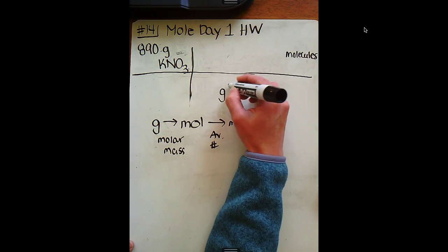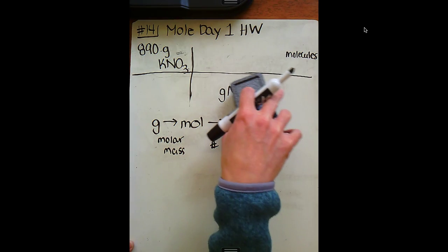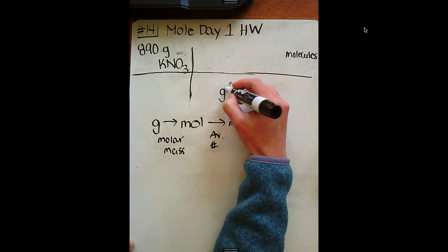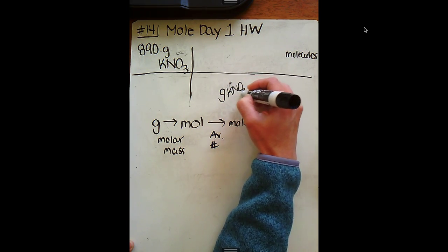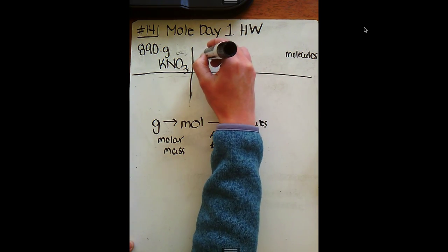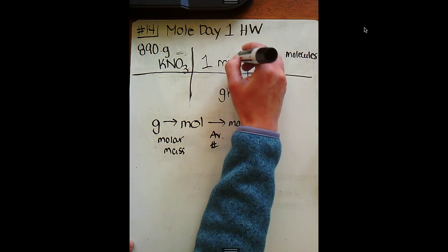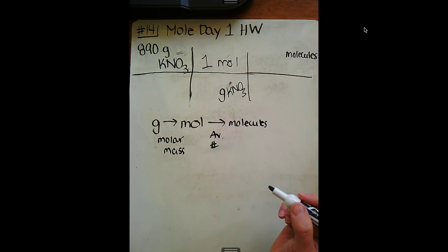Let's go ahead and take a look at that. We know that grams is going to drop down here to get rid of it, so I go ahead and put grams of KNO3 here. We know that the molar mass is going to represent one mole. So the next step is to calculate what is the molar mass of potassium nitrate.